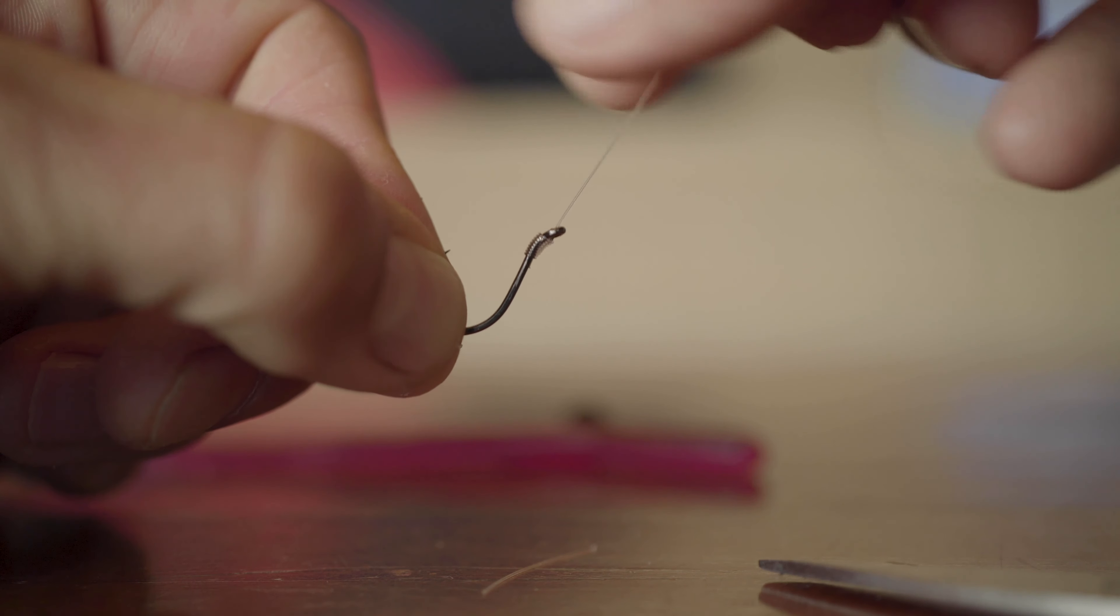Start the knot by putting the line down through the eye hole from the top as you normally would, then pinch the line on the shank of the hook. The idea is to come back around and create a big loop with your line. You need both tag ends—you can't do it with only one tag end.